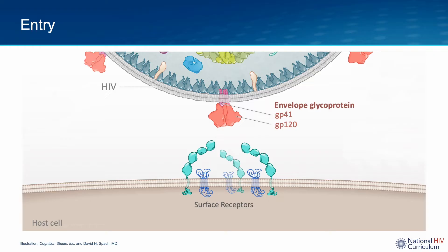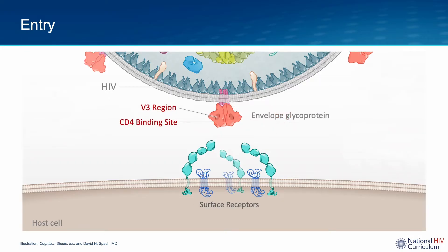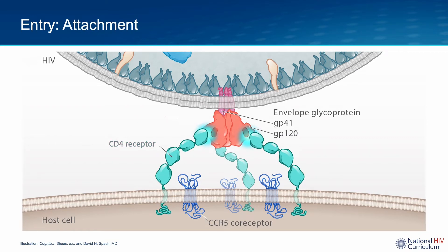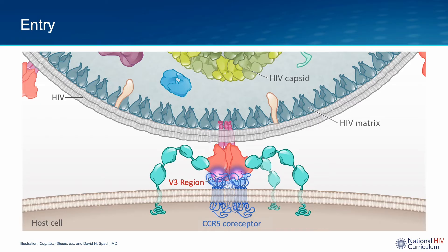The key HIV component in cell entry is the envelope glycoprotein, which consists of the outer GP120 subunit and the inner folded GP41 subunit. The GP120 subunit has two regions particularly important in entry: the V3 region and an outer groove known as the CD4 binding site. The initial contact between HIV and the host cell typically involves binding of HIV GP120 with the host cell CD4 receptor at the CD4 binding site.